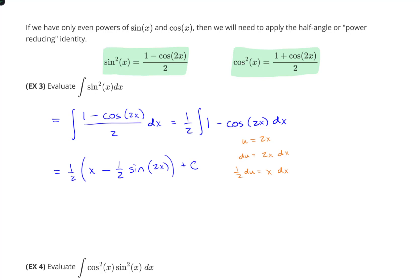So that we could write as our final answer, or you could distribute the 1 half. That would be x over 2 minus 1 fourth sine of 2x plus C.